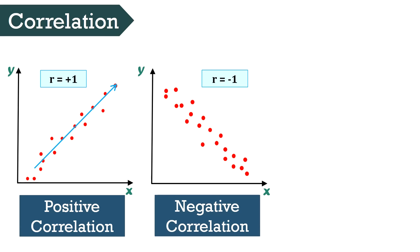Negative correlation represents the degree to which one variable increases when there is a decrease in another variable, forming an inverse relationship. In the case of negative correlation, variables move in opposite directions. For example: price and demand, speed and travel time, and age and eye vision.